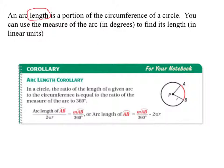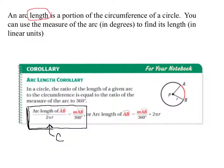The arc length corollary: the arc length of arc AB over 2 pi R, which is your circumference, equals the measurement of arc AB in degrees divided by 360. Memorize this: length over circumference equals degrees over 360.